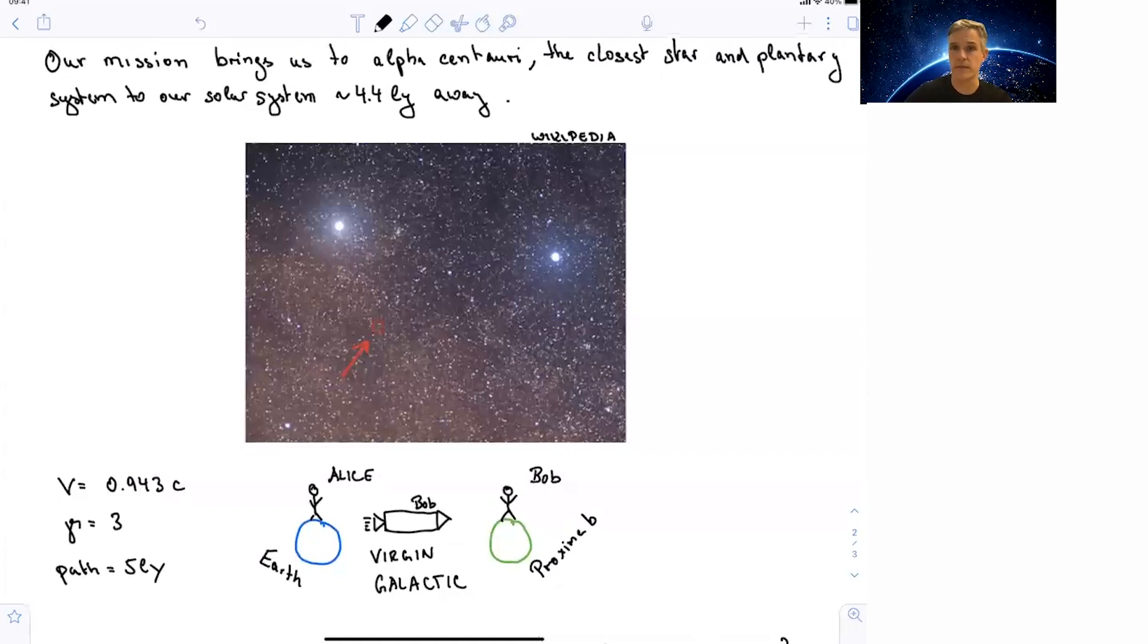Alice is our ground control. She's going to stay on Earth. And Bob is going to take this journey with Virgin Galactic. After some time, Bob is going to arrive on Proxima b.